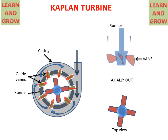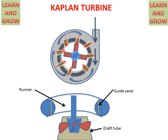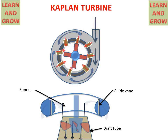Now we see the next figure for a clearer understanding. We have two figures: in the upper figure, water comes, rotates, enters from the guide vanes, and the runner starts rotating. In the lower figure, when water comes from the guide vanes, it axially strikes on the blades or vanes of the runner, then goes outside in the axial direction through the draft tube, and the runner starts rotating.